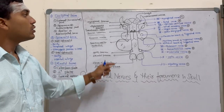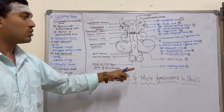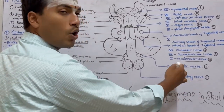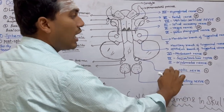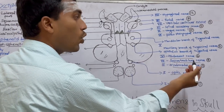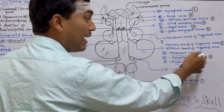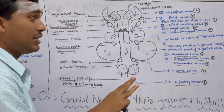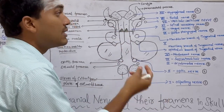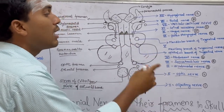Coming to the 12 pairs of cranial nerves: the first one is the olfactory nerve, second is the optic nerve, third is the oculomotor nerve, fourth is the trochlear nerve, and fifth is the trigeminal nerve, which consists of three branches — ophthalmic, maxillary, and mandibular.